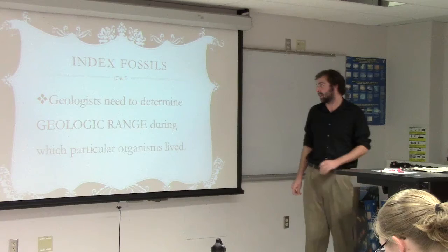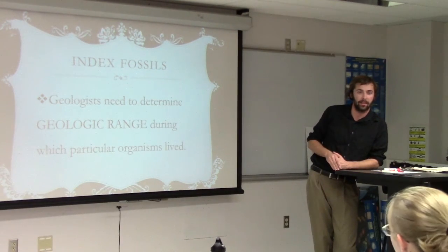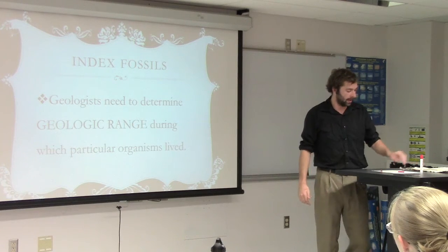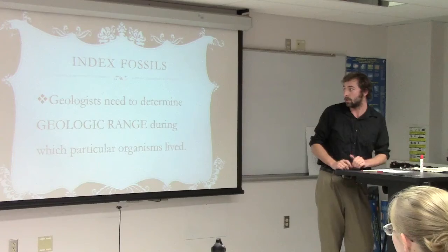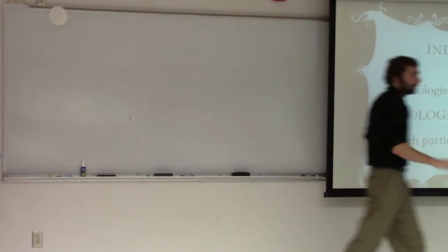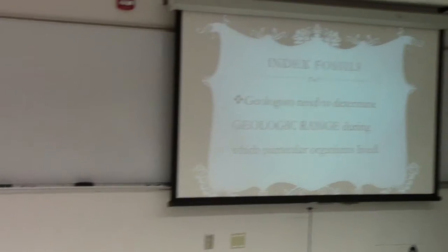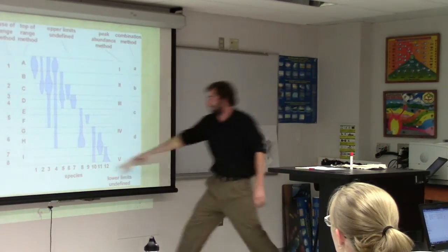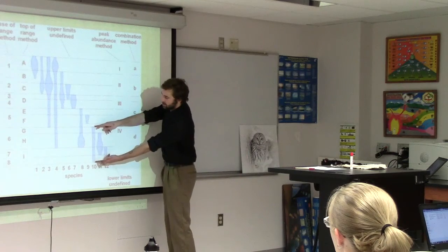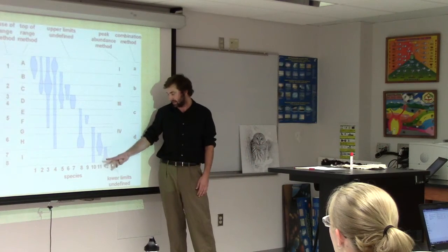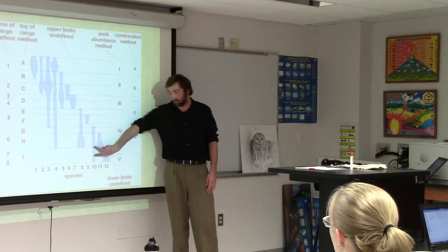So what geologists need to determine is the geologic range during which particular organisms lived. And that way we can set up a geographic range model to help determine when a rock may have been formed. And instead of looking at actual rocks, I thought we could just make our own geographic range model to try and help demonstrate what I'm talking about. Here's an example of a geographic range model. So we have these species here. And you can see that certain species are only alive for a certain amount of time. So if you were to find a rock and it had species 12, 11, and 10, you can relatively say that that rock formed during this time period.